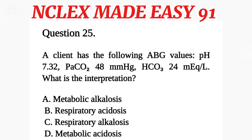Question 25. A client has the following ABG values: pH 7.32, PCO2 48 mmHg, HCO3 24 mEq/L. What is the interpretation? A. Metabolic alkalosis. B. Respiratory acidosis. C. Respiratory alkalosis. D. Metabolic acidosis.